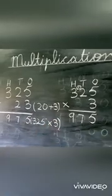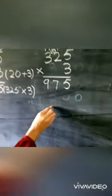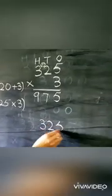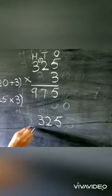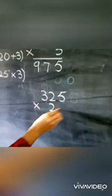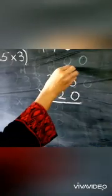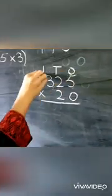Again we are going to write 325. Now we are going to multiply this with 20. 1s place values: 1s, 10s and 100.